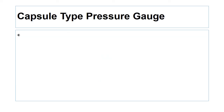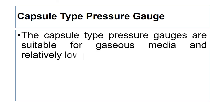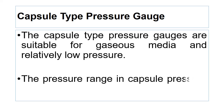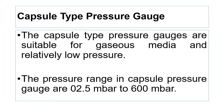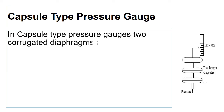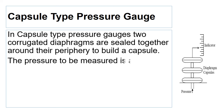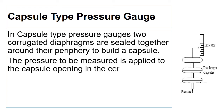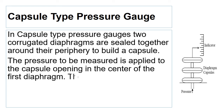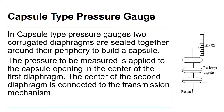The capsule type pressure gauge is suitable for gaseous media and relatively low pressure. The pressure range in capsule type pressure gauges is 2.5 millibar to 600 millibar. In capsule type pressure gauges, two corrugated diaphragms are welded together around their periphery to build a capsule. The pressure to be measured is applied to the capsule opening in the center of the first diaphragm. The center of the other diaphragm is connected to a transmission mechanism so that the deflection of the measuring element can be transmitted to the pointer.